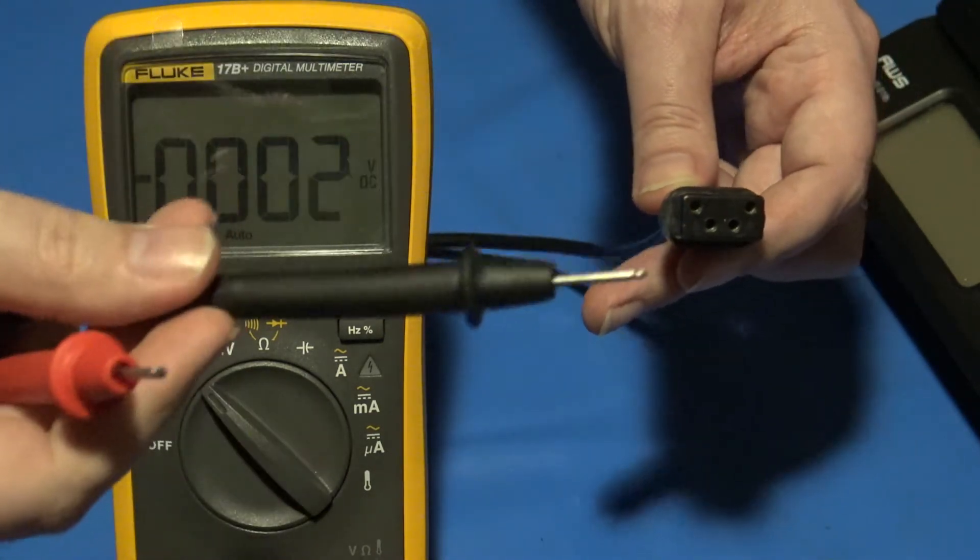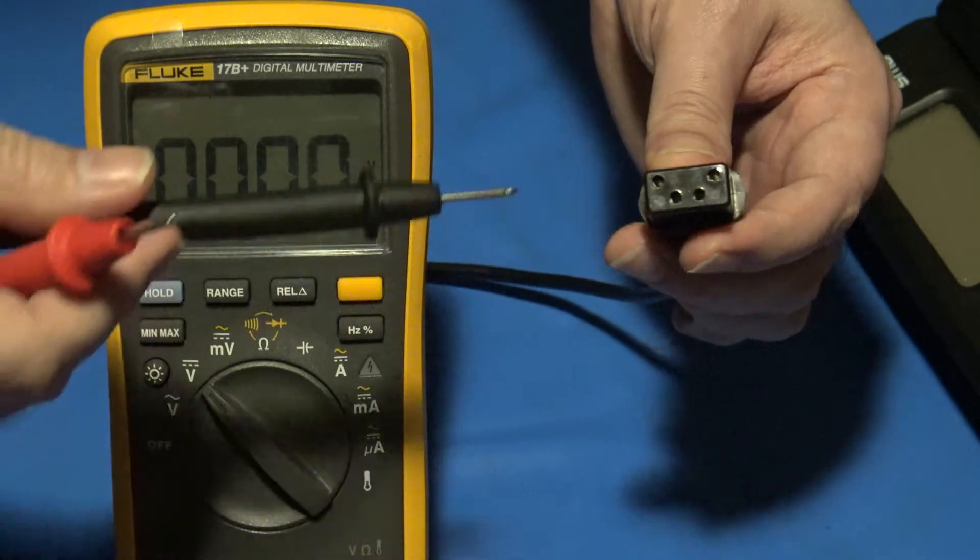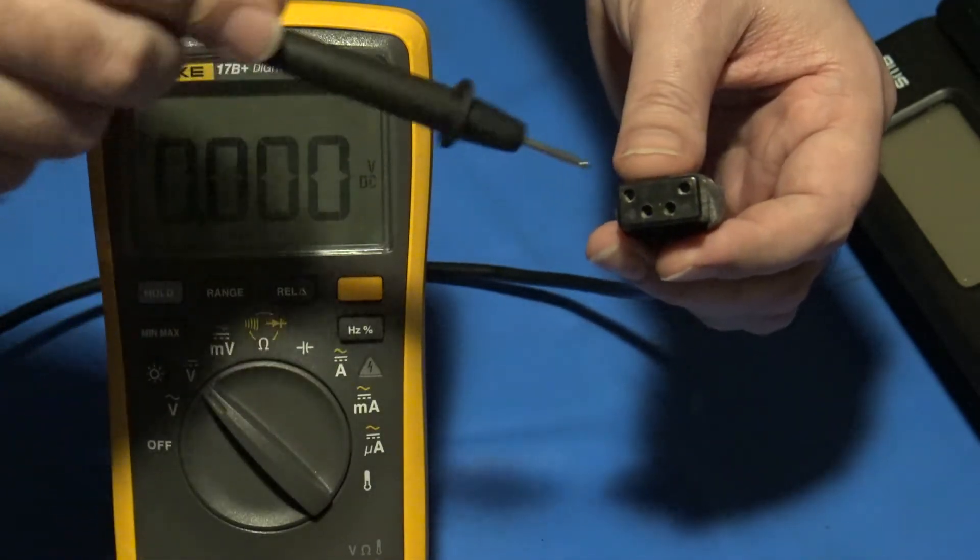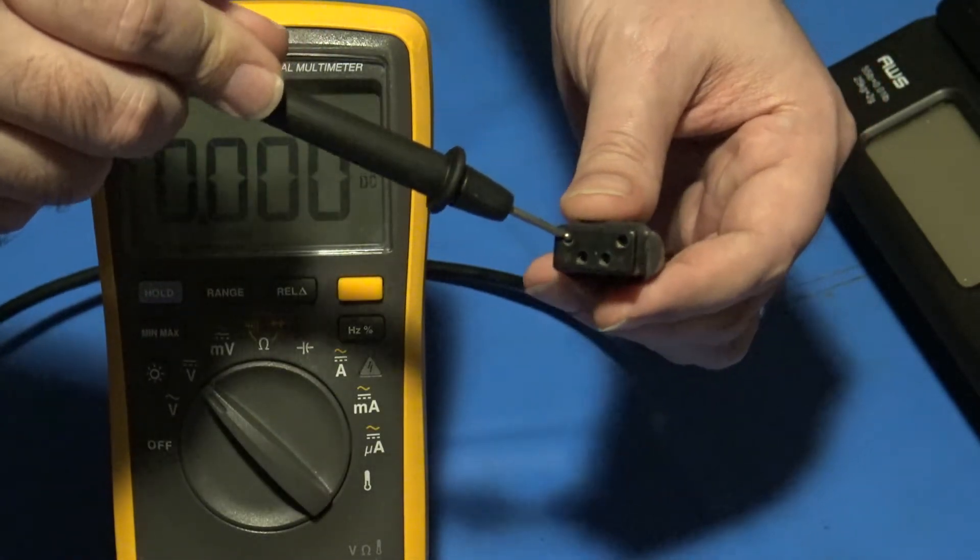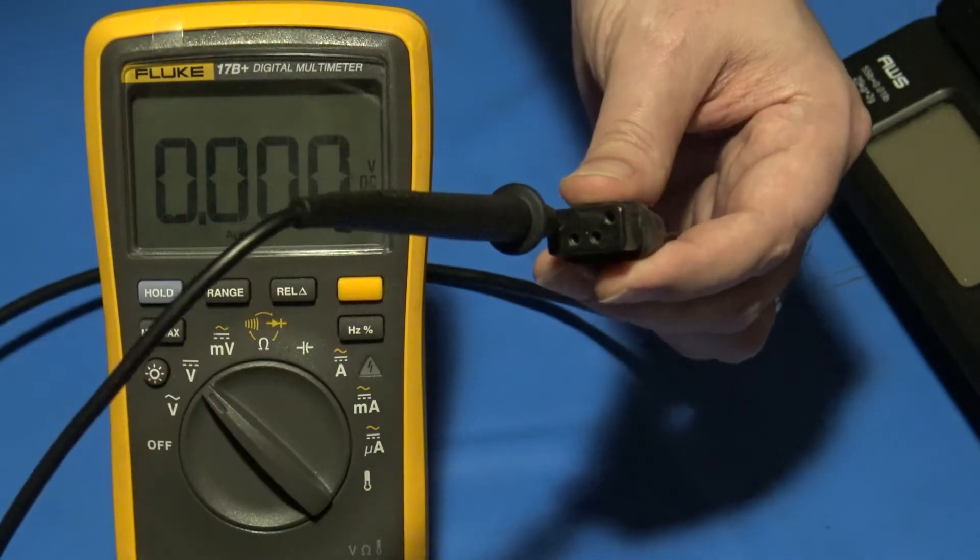What you're going to do is take the negative black probe, and it's going to go into the ground or common lead, which is this pin right here. I'm just going to jam it in there like that.